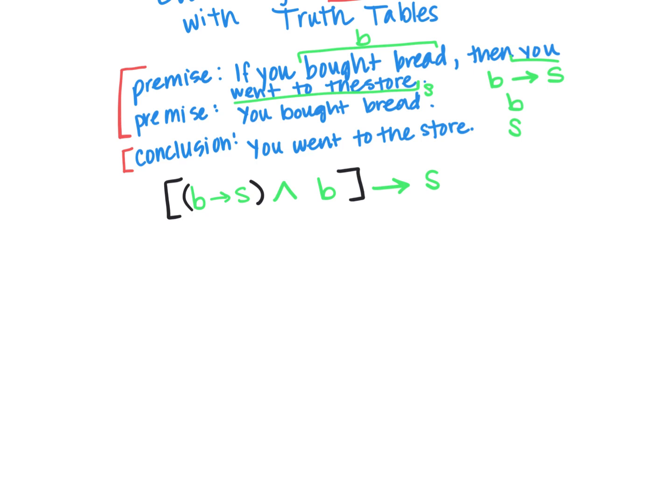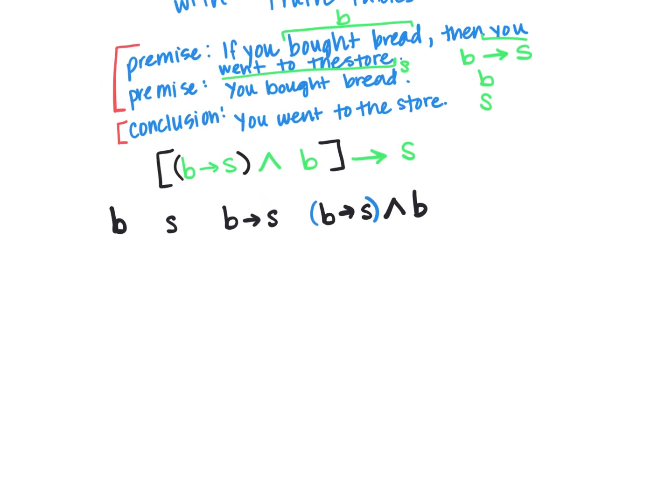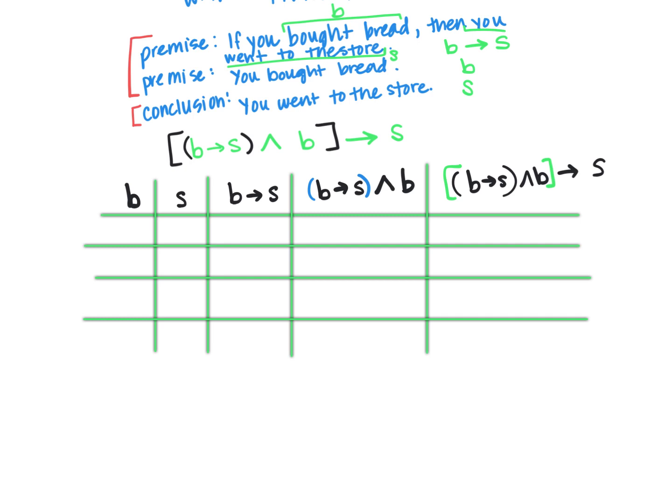So let's start with, we need to know B and S, and then we'll look at B implies S. Then we'll put that together with the and B. I'm going to put my parentheses in here so there's no confusion. And so then once we have that, we'll be able to go and look at that final conditional, which will be B implies S and B implies S.